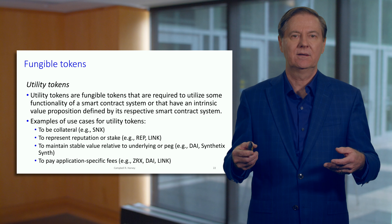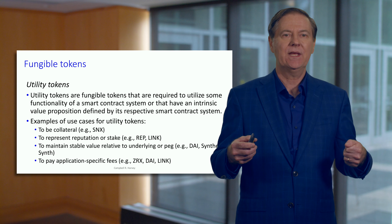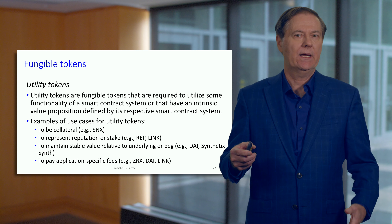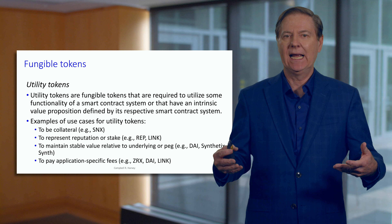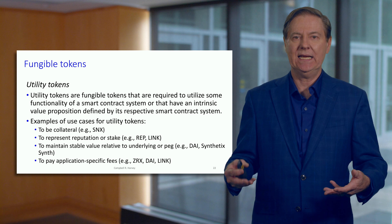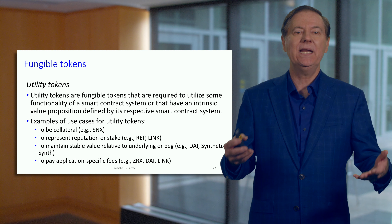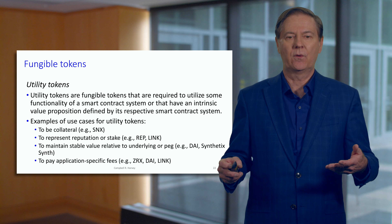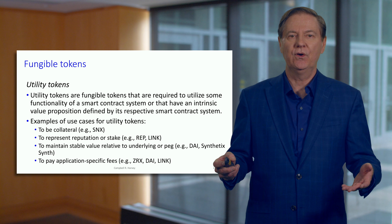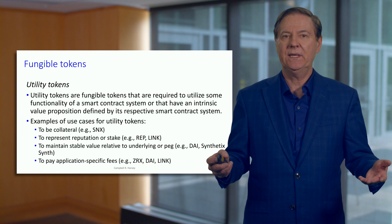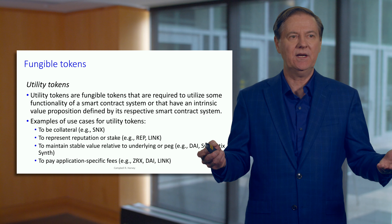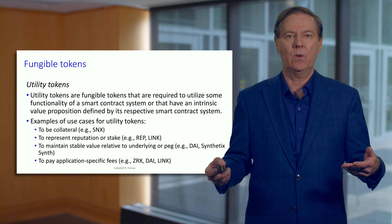There are at least three different types of tokens. We just talked about equity tokens. There are also utility tokens — this means the token is required to utilize a functionality of a particular contract. It provides utility in that you need it to actually run the contract, and its value is determined by how useful that contract actually is. There are many different types of utility tokens.